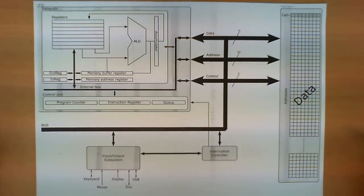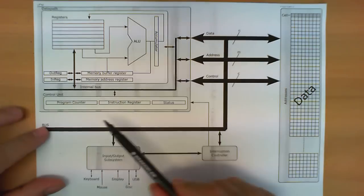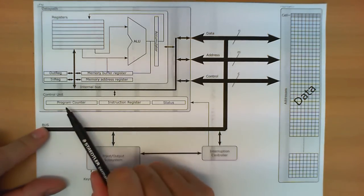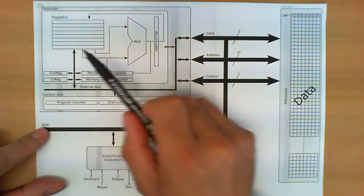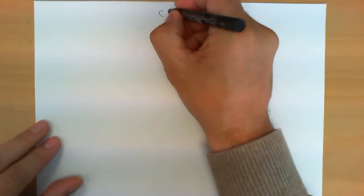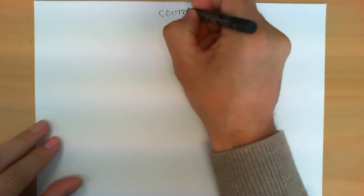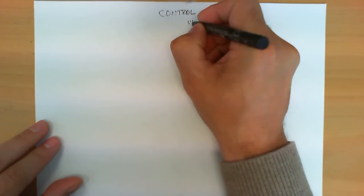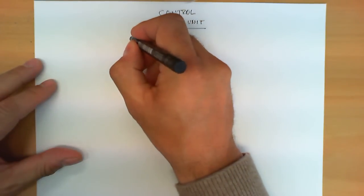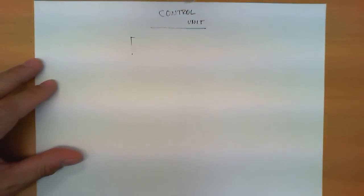In this video we're going to explain what is the role of the control unit. The control unit is one part of the CPU and is sitting next to the data path. The main purpose of the control unit, as the name suggests, is to make sure that the rest of the chip or the rest of the CPU is performing the right operations.